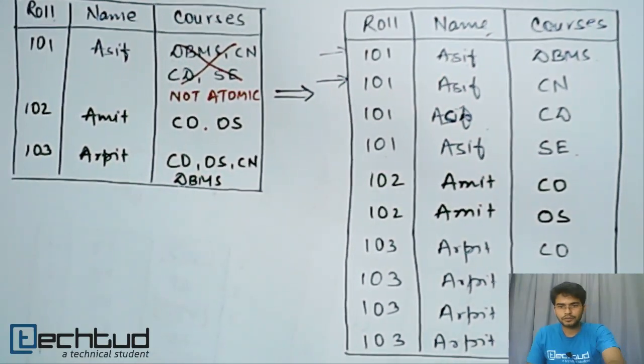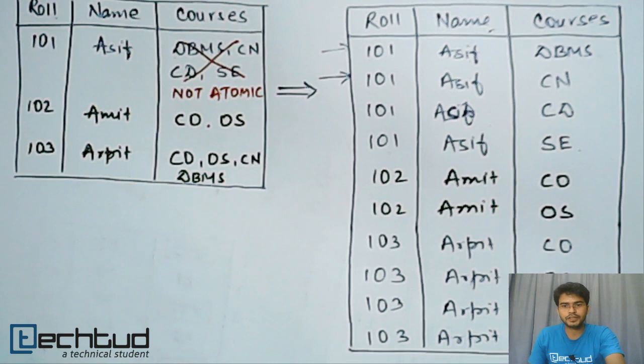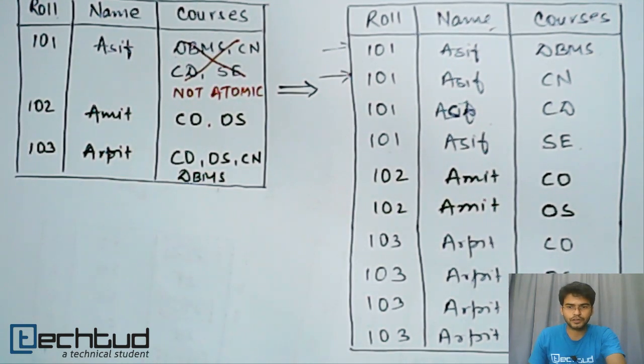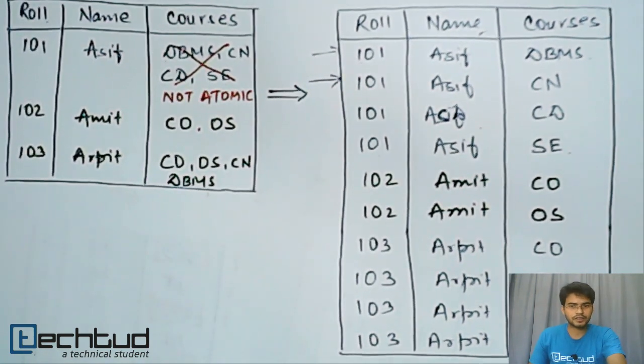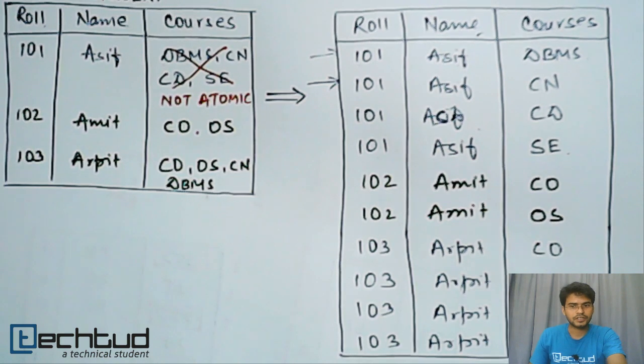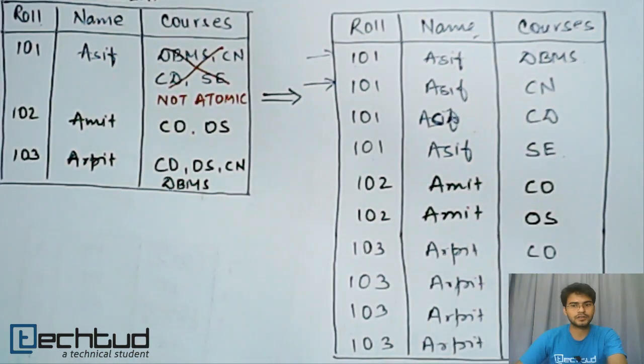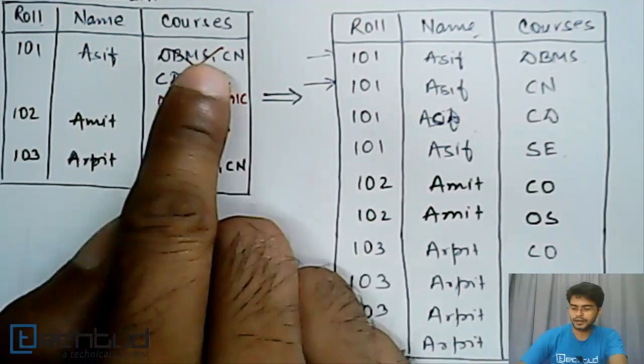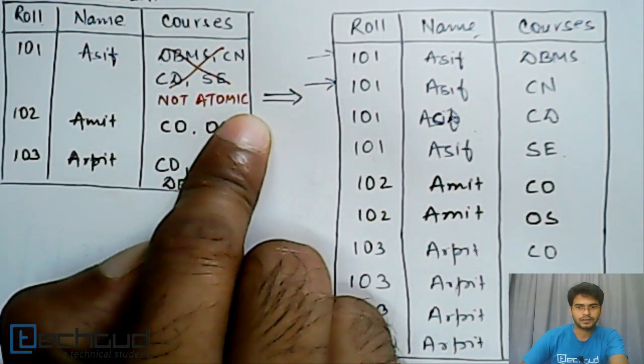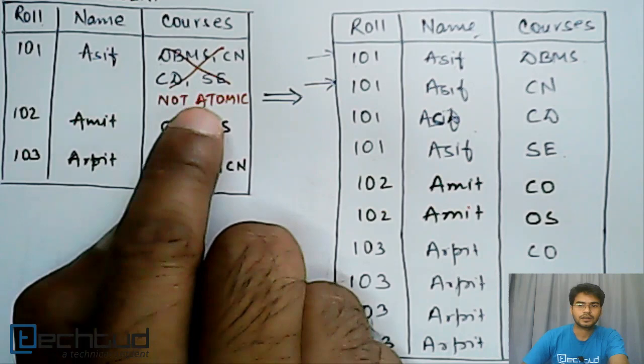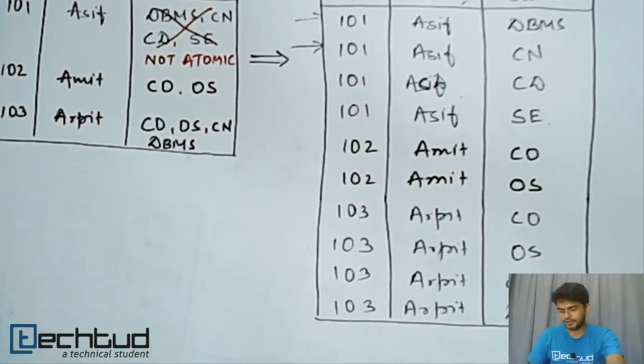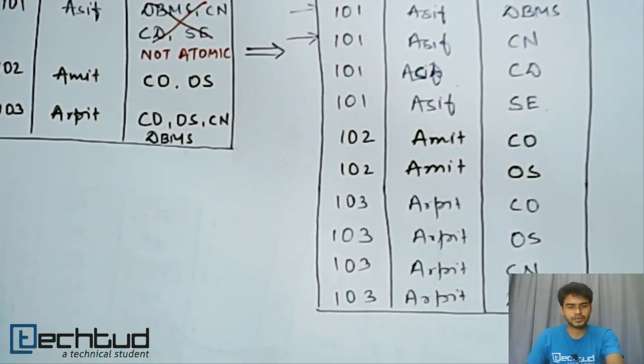So whenever you get a question on this, to find out whether a relation is in first normal form or not, you have to just take care whether the values are atomic in the cell or not. If the values are atomic like in this table, it will be in first normal form. But if there are multiple values like this, it will not be in first normal form. So as simple as that. I hope this is clear. Thanks for watching.